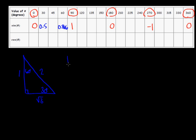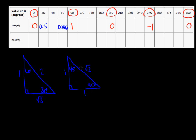For 45 degrees, we use our other special triangle, which has two 45-degree angles. The leg lengths of the triangle — the sides that join at the 90-degree angle — are 1, and the hypotenuse is root 2. So the sine of 45 degrees is equal to 1 over root 2, which equals about 0.707.